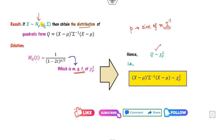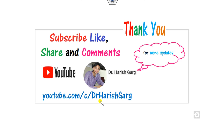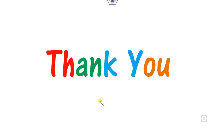This is a simple way to derive the distribution of the quadratic form. I hope you liked my video — please share it with your friends. In the next lecture, we will see how you can find the estimators of the multivariate normal distribution. Till then, share with your friends, like and comment on my video. Best of luck students, happy learning.